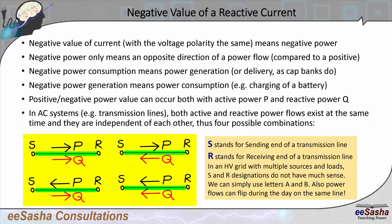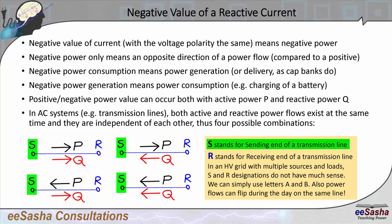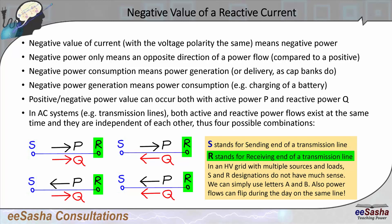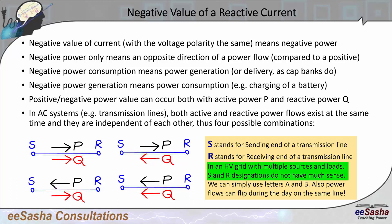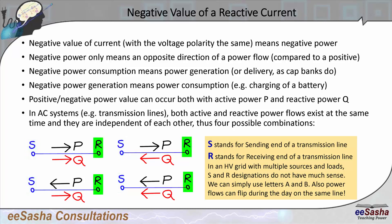Here is a transmission line with S designated as the sending end and R as the receiving end. That could be a feeder or a distribution line. In a high-voltage system where you have many sources and loads — essentially a grid of lines — saying one end is the sending end and the other is the receiving end doesn't really make much sense. But for calculation purposes, we tend to designate one end with subscript S and the other with subscript R. If power flow changes direction, the sending end may become the receiving end, so in that case you can also designate the line simply as A and B.